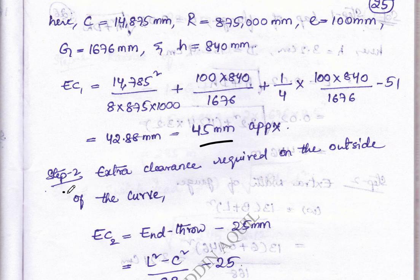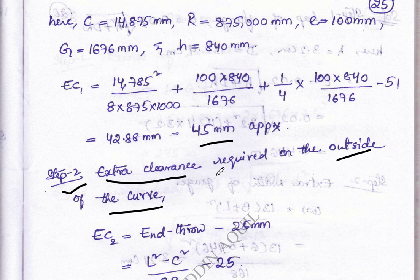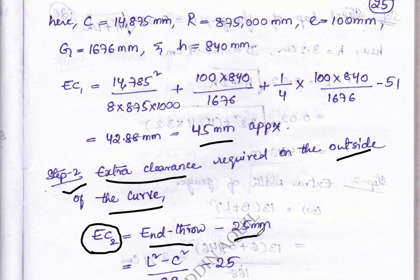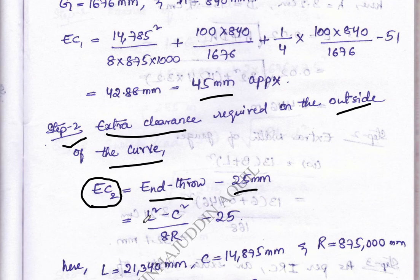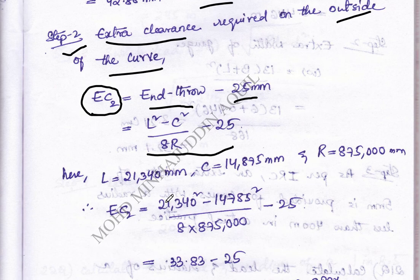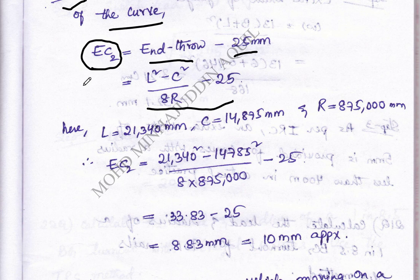Step 2: calculating the extra clearance required for outside of the curve, denoted by EC2. EC2 equals end throw minus 25 mm. End throw can be written as capital L squared minus C squared divided by 8R, minus 25 mm. This is the formula. Substituting all values, we get both EC1 and EC2.